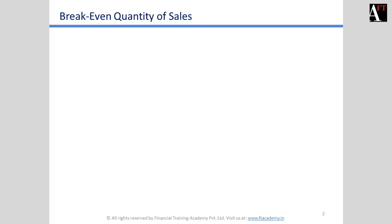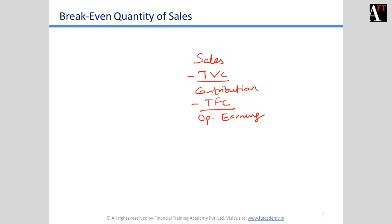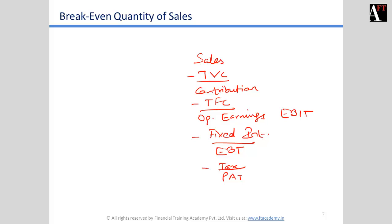This profit or loss could be viewed from different levels. The key elements of a profit and loss statement are: Sales, then deducting total variable cost gives us contribution margin, deducting total fixed costs gives us operating earnings — also called EBIT — then deducting fixed interest expenses gives earnings before tax, and deducting tax gives profit after tax or earnings after tax. Different breakeven quantities exist to achieve breakeven at the operating earnings or EBIT level.